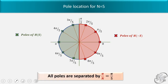The figure shows the pole locations for n equal to 5. Poles are located at 0, π/5, 2π/5, 3π/5, 4π/5, π, 6π/5, 7π/5, 8π/5, and 9π/5. All poles are separated by π/n, which in this case is π/5.